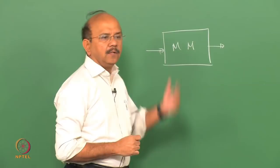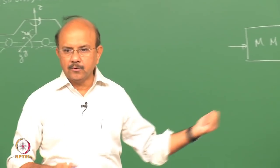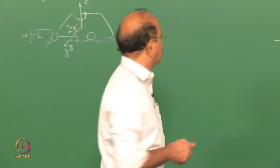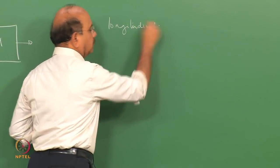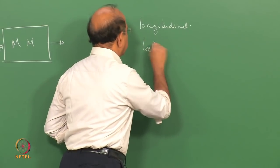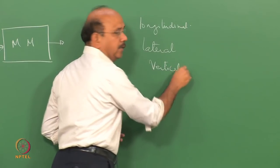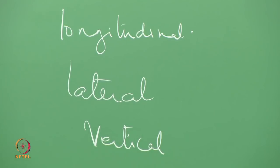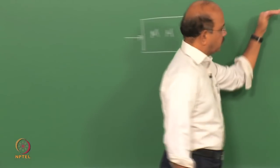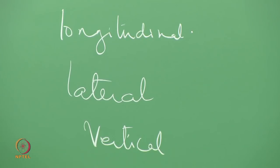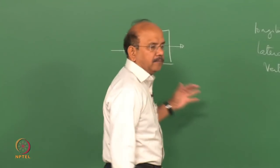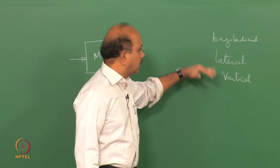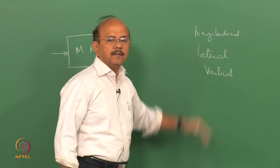When we looked at the dynamics defined by these mathematical equations, they are classified into what we called longitudinal dynamics, lateral dynamics, and vertical dynamics. We said we classify the dynamics we are going to study using this mathematical model into longitudinal, lateral, and vertical dynamics. For the ease of understanding, we may most of the time delineate or decouple them and study them in isolation.